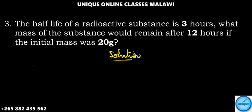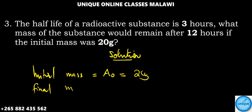We have initial mass denoted by A₀, which is 20 grams. Final mass is denoted by Aₙ. And n represents the number of half-lives.